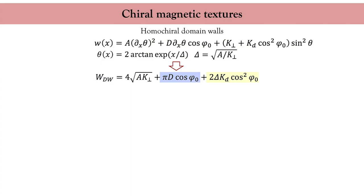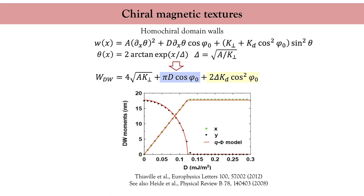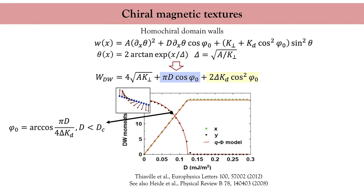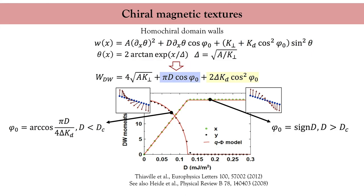To obtain the value of phi_0 we minimize the energy, yielding a graph from the pioneering work of André Thiaville on the physics of Dzyaloshinskii-Moriya domain walls. The ordinate shows the equilibrium component of the magnetic moments in the center of the domain wall, and the abscissa shows the value of the Dzyaloshinskii-Moriya interaction. In the absence of the Dzyaloshinskii-Moriya interaction, the wall is in a Bloch configuration as dictated by the dipolar energy. Upon increasing the Dzyaloshinskii-Moriya interaction, the magnetization in the wall progressively tilts away from the y-direction until, when the interaction is large enough, the wall is in a Néel configuration.